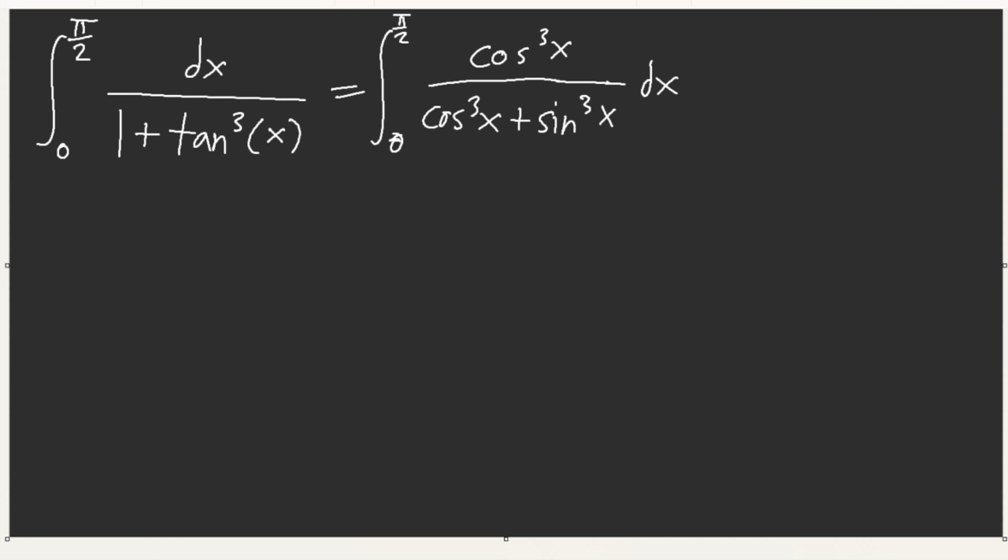You let u equal π/2 - x. And then all that happens is you just convert cosines to sines and that's it. So now it's sin^3. The denominator does nothing because of commutative property. Now, because of that, we know that if we let i equal this integral, then 2i...